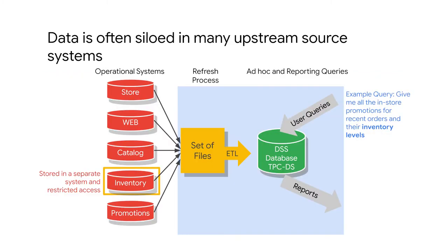So what makes data access so difficult? Primarily it's because data in many businesses is siloed department by department, and each department creates its own transactional systems to support their own business processes. For example, you might have operational systems that correspond to store systems, a different operational system maintained by a product warehouse that manages your inventory, and then a marketing department that manages all the promotions.